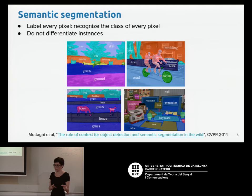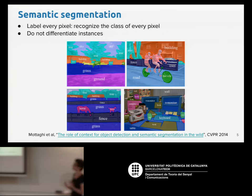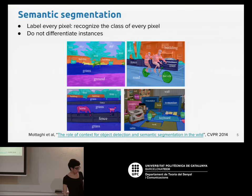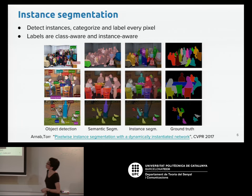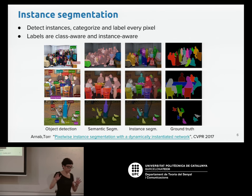We can group methods into two different tasks. One is called semantic segmentation, where the goal is to assign a label to each pixel related to the category or class. But here we do not differentiate between different instances of the same class — for instance, two persons get the same label. The other problem is called instance segmentation, where labels are class-aware and also instance-aware, so different persons and different chairs get different labels.